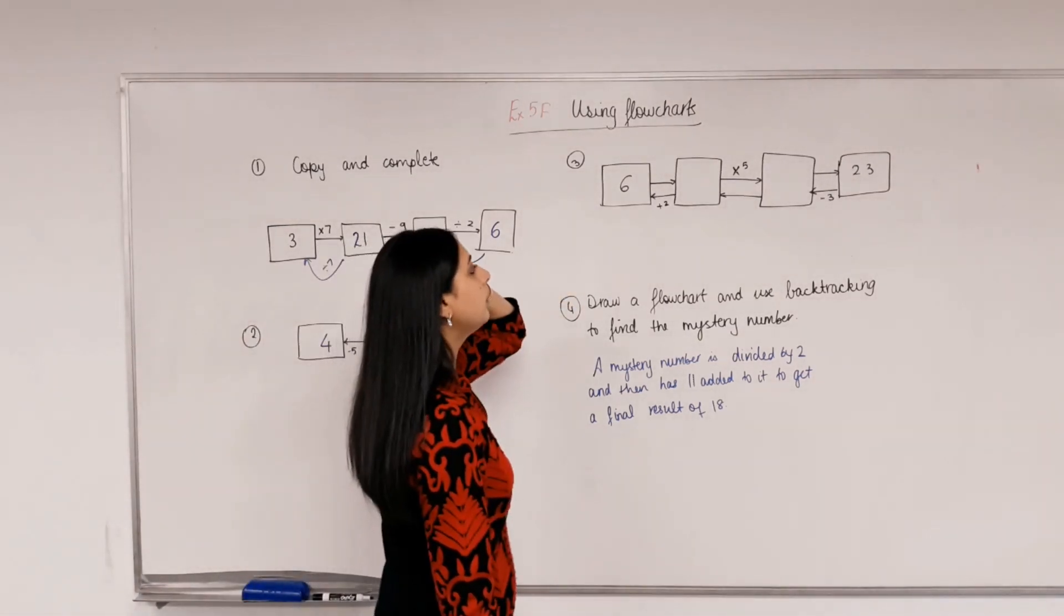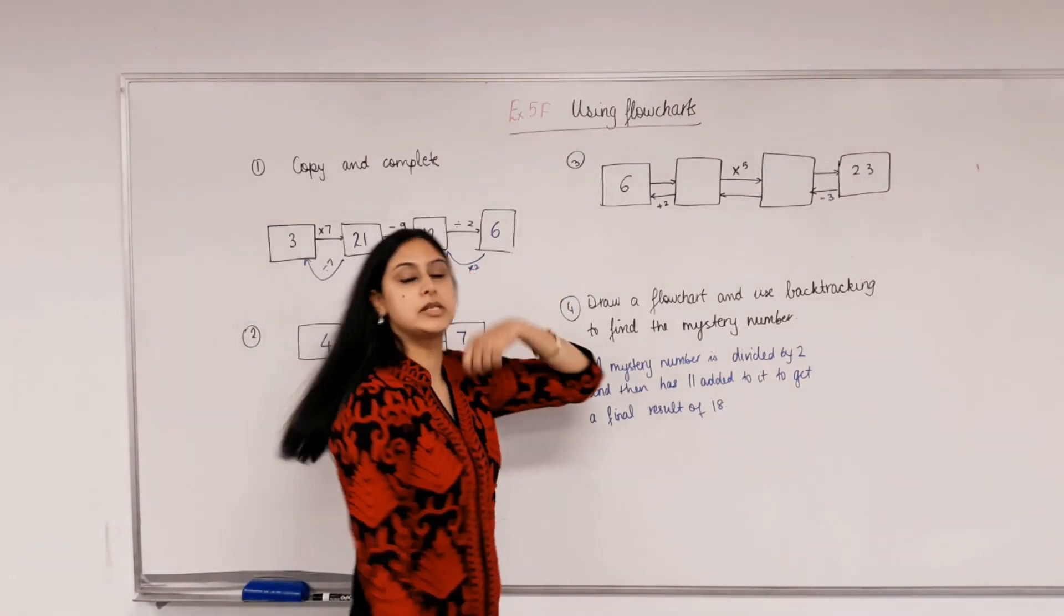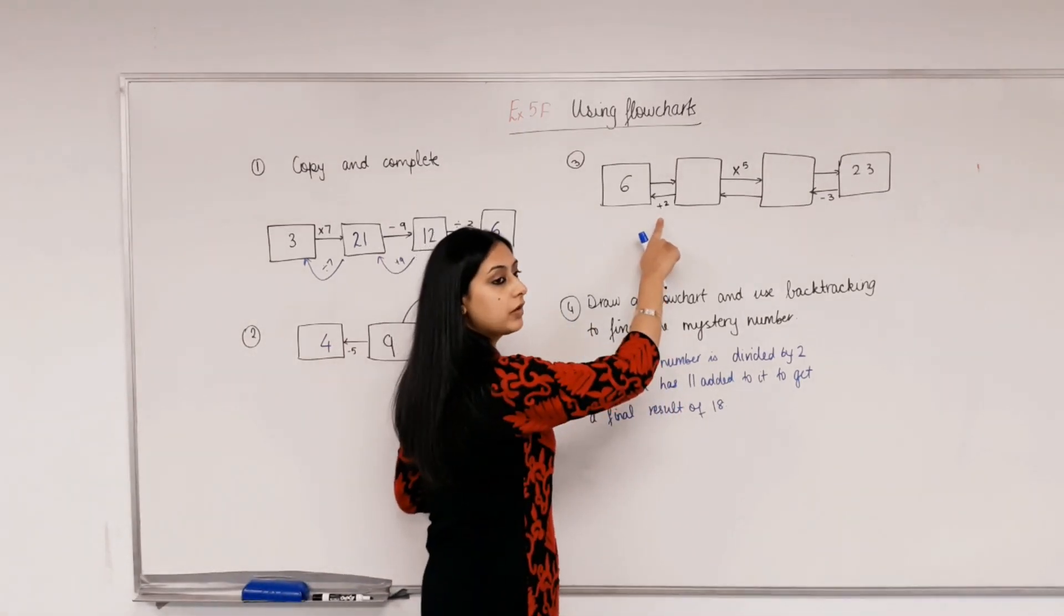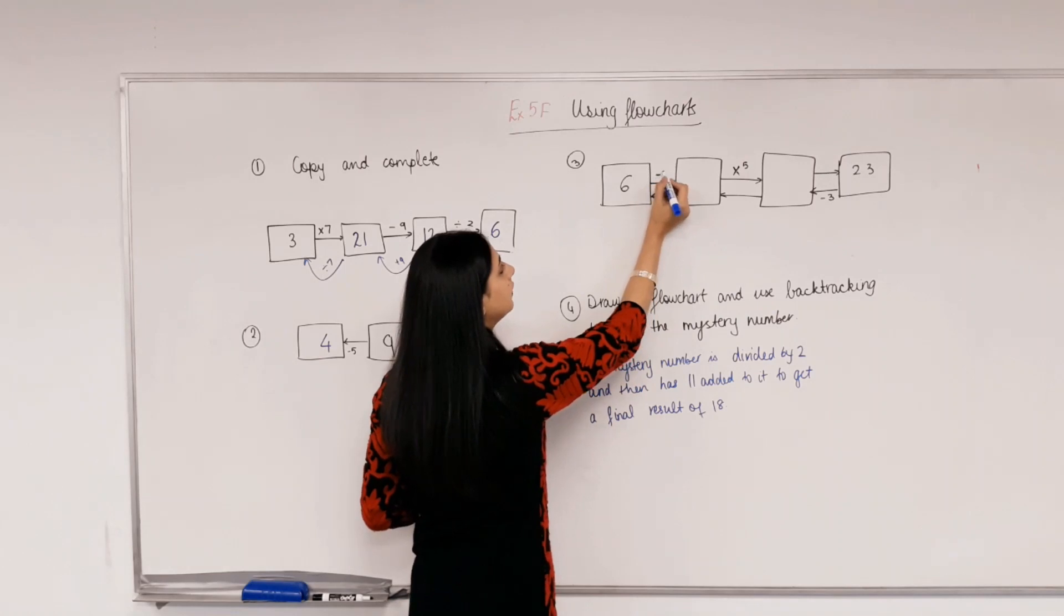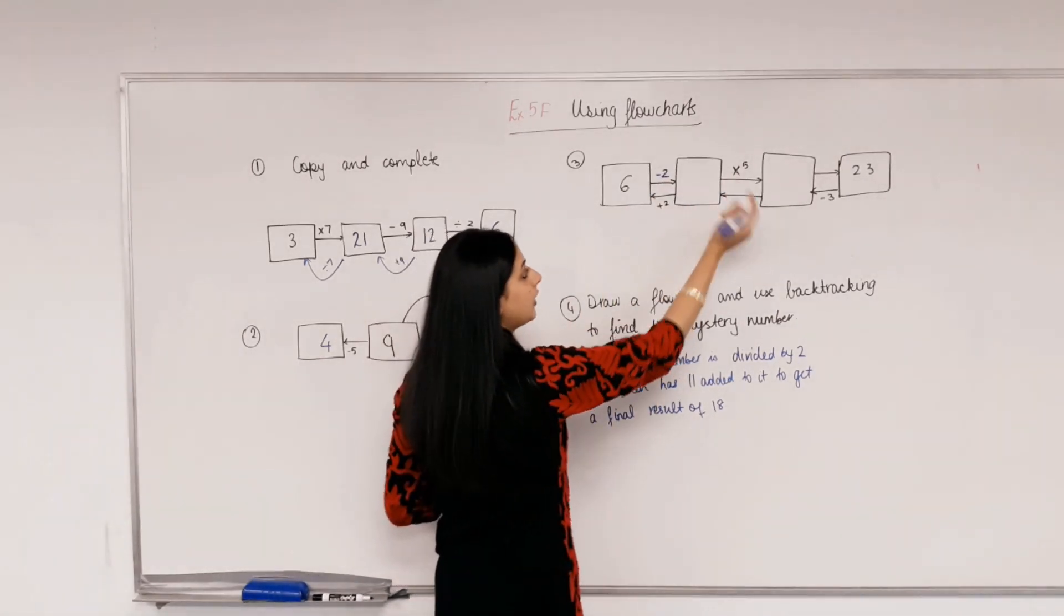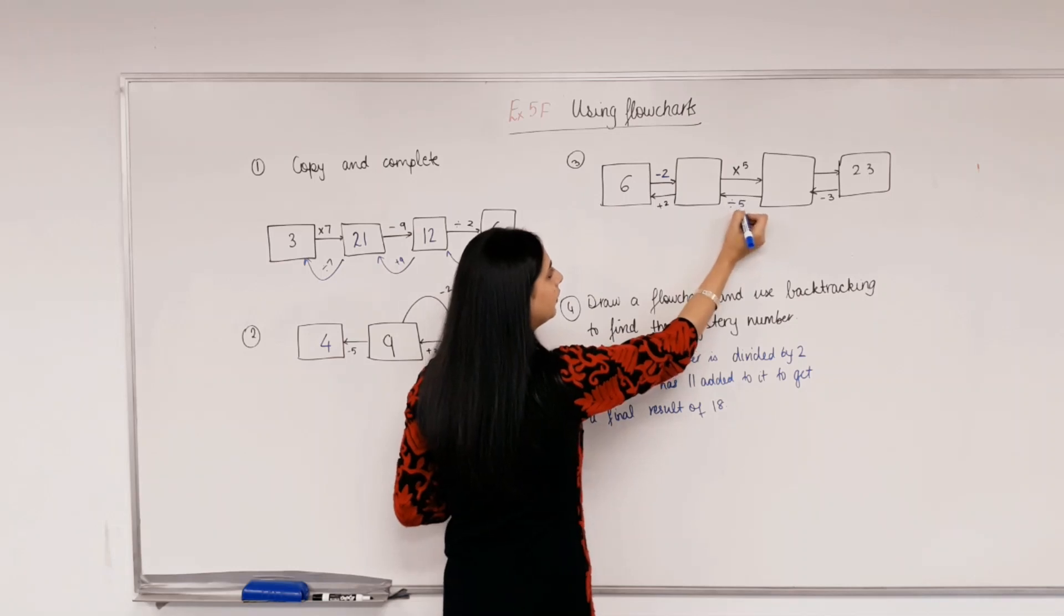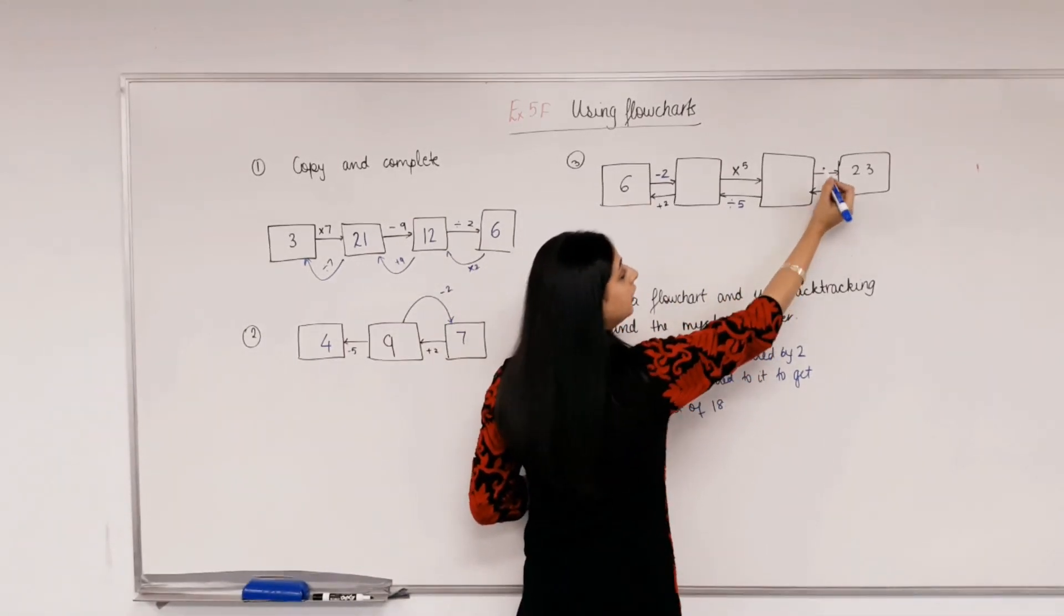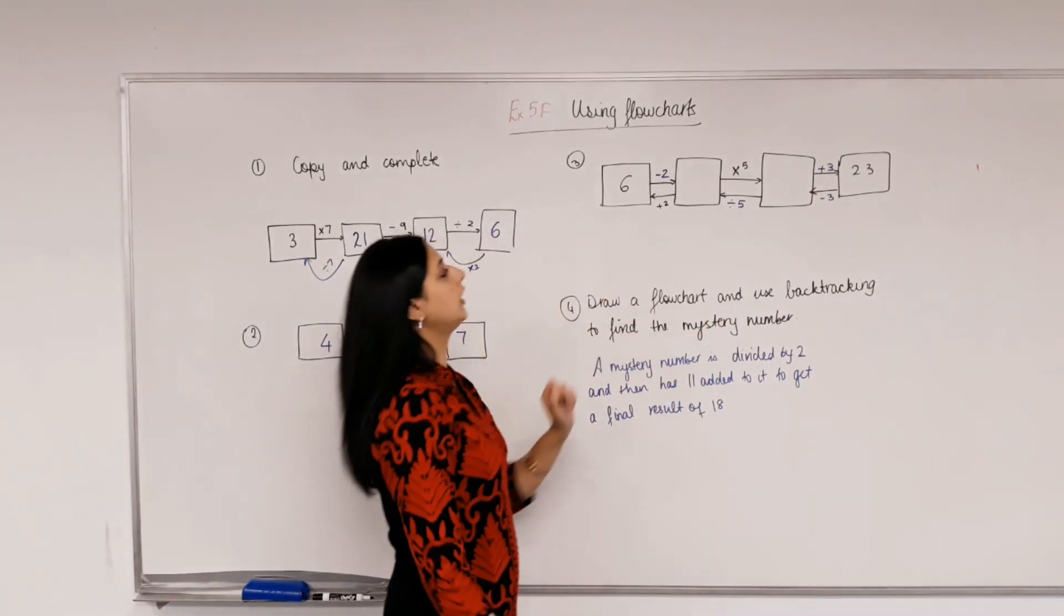Now, next one. We've been given some instructions and some are missing. Let's just write all the instructions. So if it's plus 2 in this direction, what would be the opposite of it? Divide by 2. Happy with that? What's the inverse of timesing by 5? Divide by 5. What's the opposite of negative 3? Of taking away 3? Plus 3. Right? Okay.